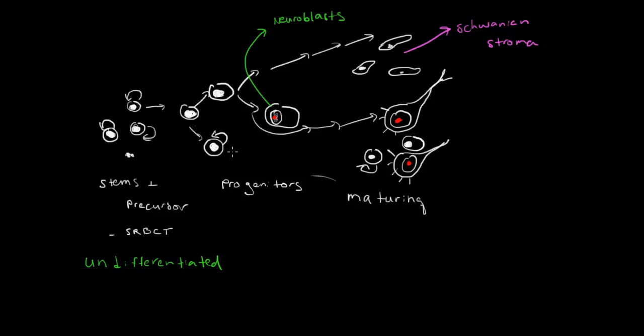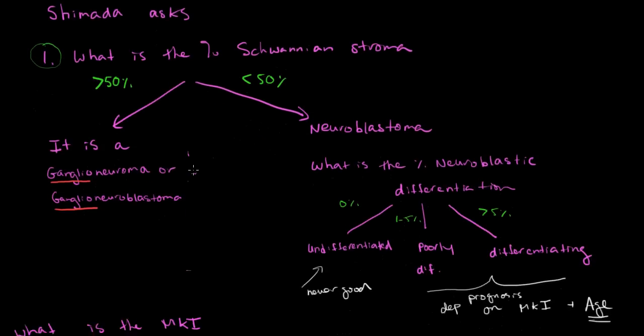And because you're looking at the maturation in relation to the patient's age, it's not really a pure grade, because it's age dependent. And so for that reason, they called it pathological categorization, and basically into groups. And the two groups that were created were favorable histology and unfavorable histology.